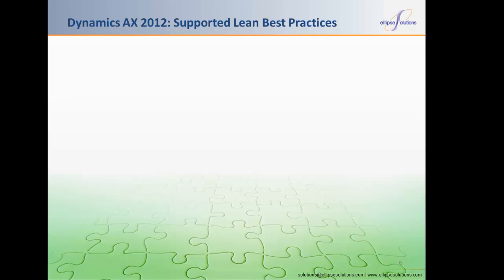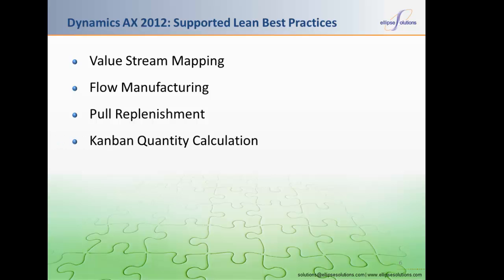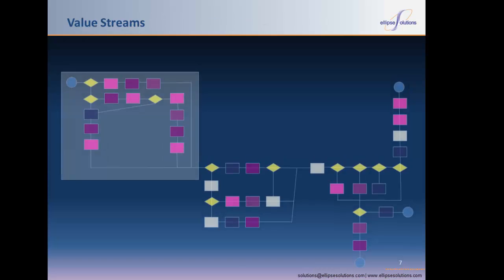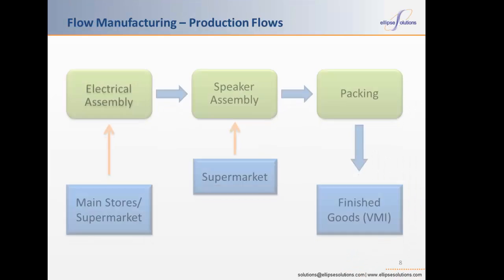Dynamics AX 2012 supports the following lean best practices: value stream mapping, flow manufacturing, pull replenishment, Kanban quantity calculation, capable-to-promise, lean accounting, and mixed mode manufacturing. The starting point for lean implementations is to understand and map the value stream. All production and transfer activities of the value stream are modeled as production flows in Microsoft Dynamics AX 2012. Flow is made possible by transforming the factory based on the results of the value stream mapping process. Production flows provide the foundation of flow by organizing all production and transfer activities to support the smooth flow of products and components through the entire value stream.